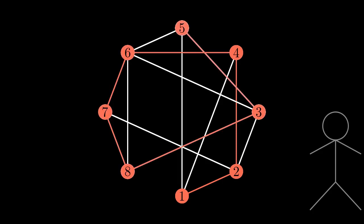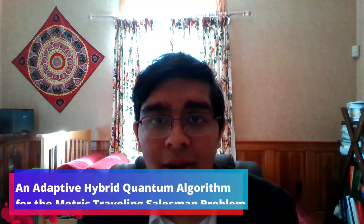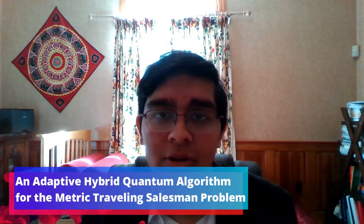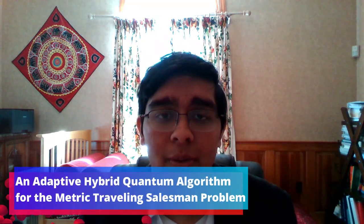This almost 100-year-old problem is known as the travelling salesman problem, and is one of the most famous problems in computer science and mathematics. Hello, I am Arul Rick Mazumdar from the Massachusetts Academy of Math and Science, and today I'll be presenting my Davidson's Fellow Scholarship Research Project: an adaptive hybrid quantum algorithm for the metric travelling salesman problem.